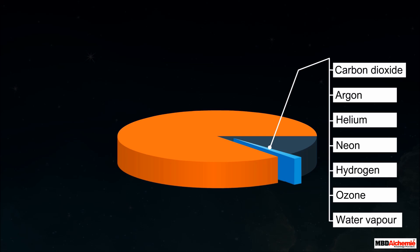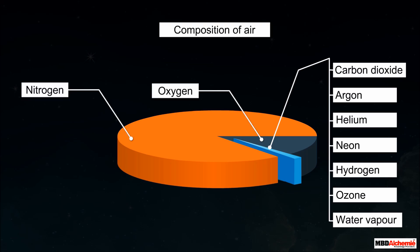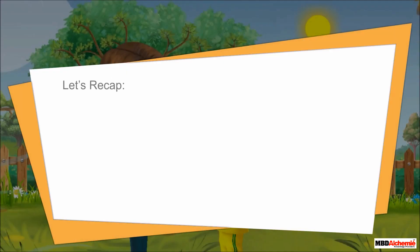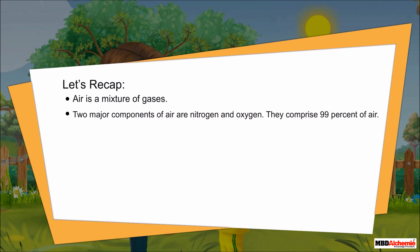So kids, now you know what air is composed of. Let's recap: Air is a mixture of gases. Two major components of air are nitrogen and oxygen. They comprise 99% of air. Gases such as carbon dioxide, argon, helium, neon, hydrogen, ozone, and water vapor comprise 1% of air.